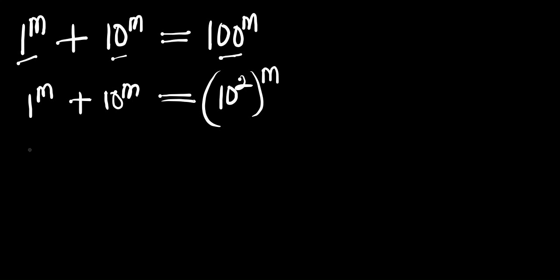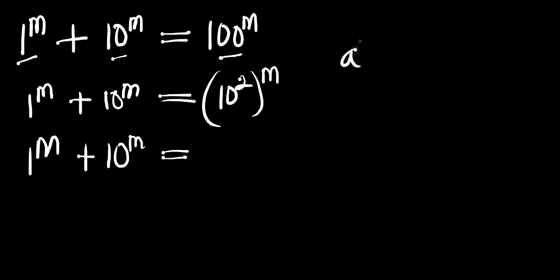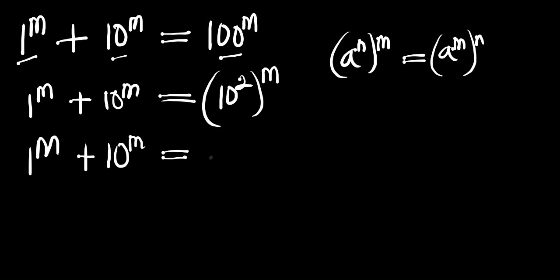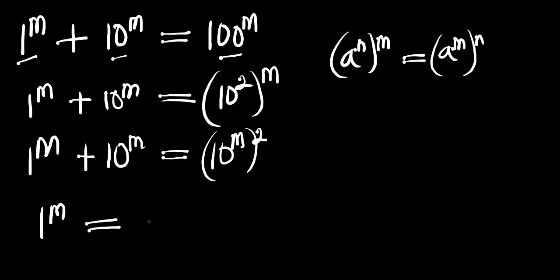So we have 1 power m plus 10 power m and this equals — let's make use of the identity a power n all power m equals a power m all power n — so we have 10 power m all power 2. From here, 1 power m will equal 1 irrespective of the value of m, which ranges from 0 to infinity.